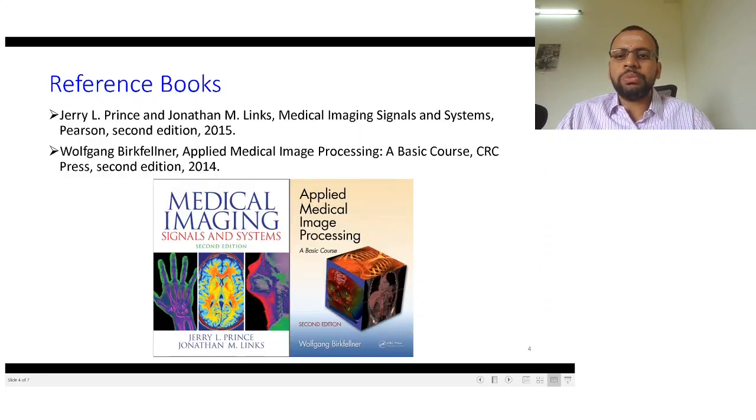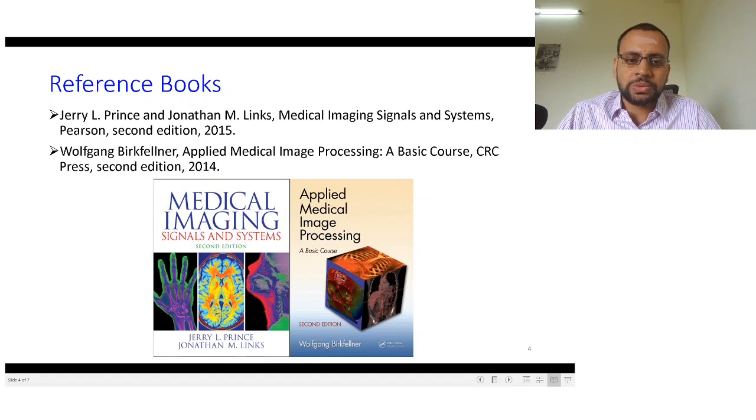When it comes to the reference textbooks, the content is based on various resources, not just one reference book is strictly followed. For example, two of the important books are Medical Imaging Signals and Systems, this is the book by Jerry L. Prince and Jonathan M. Links. So this is one textbook from where some of the material has been taken.